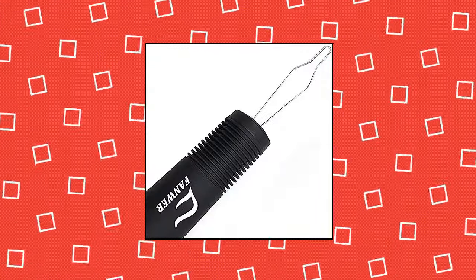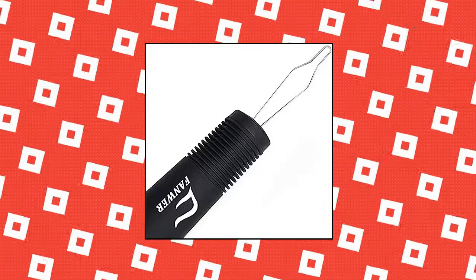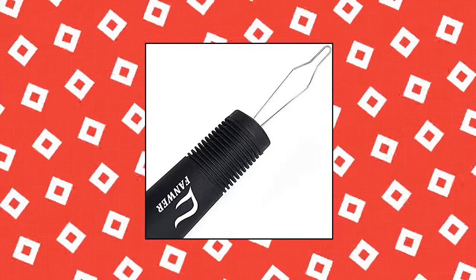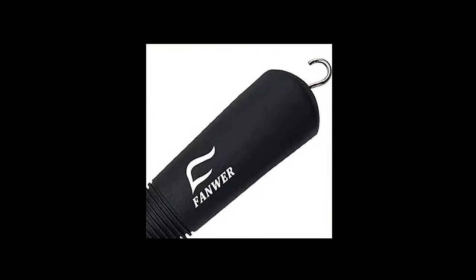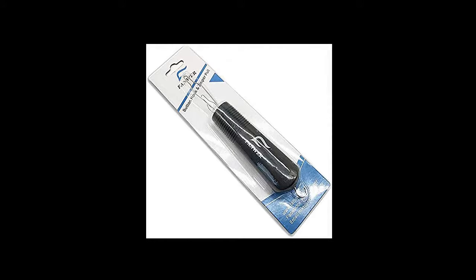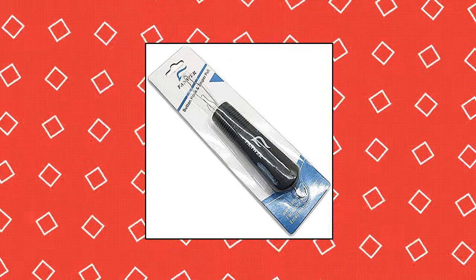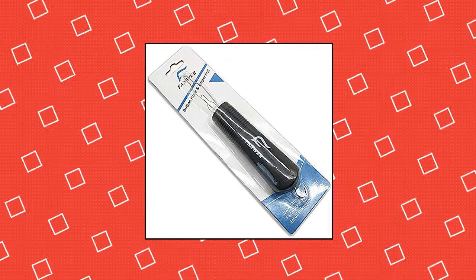Soft grip handle - each button hook dressing aid features a cushion, slip-resistant handle to give you greater control, comfort, and dexterity when handling. Snag free wire loop - the steel wire loop is slim, yet durable. Easily sliding through small buttonholes, the wire loop is smooth and will not snag the fabric or buttonhole threads.